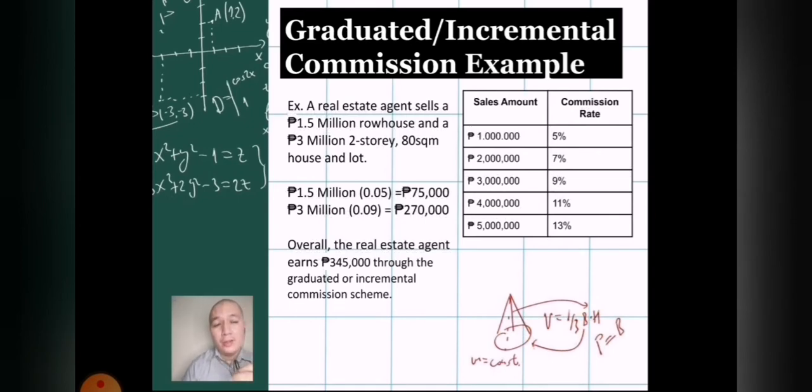For example here, let's look first at the table. Let me emphasize the table here. Notice that as the sales amount increases, the commission rate also increases. For ₱1 million it's 5% commission, ₱2 million is 7%, ₱3 is 9%, ₱4 is 11%, and then ₱5 is 13%. So that's how a graduated and incremental commission works.